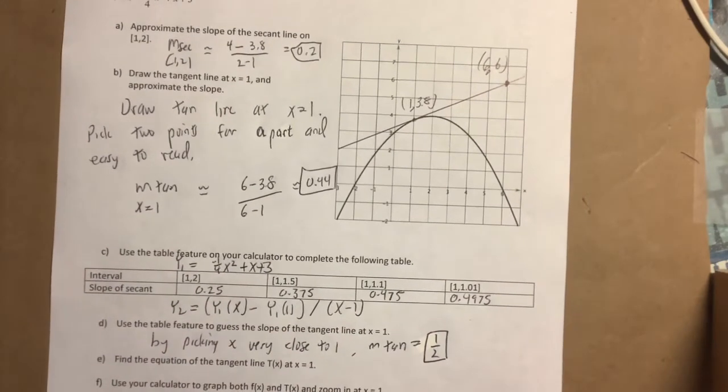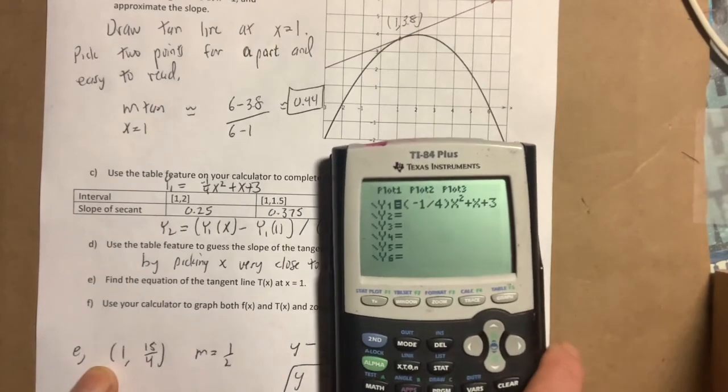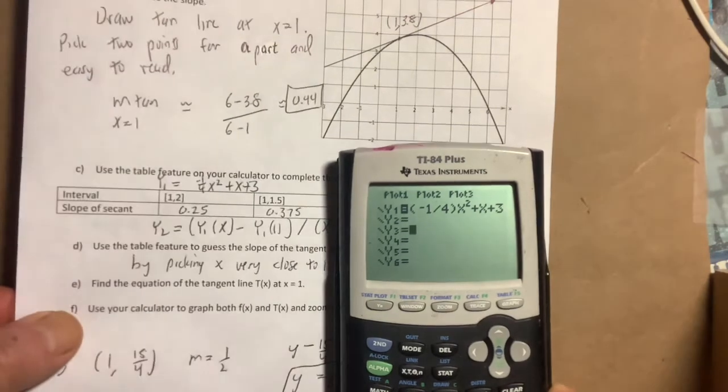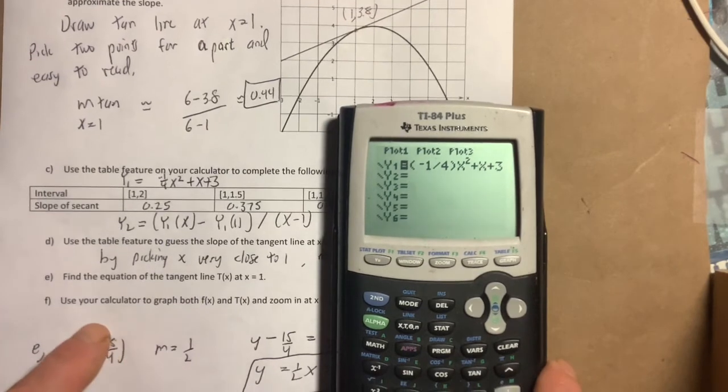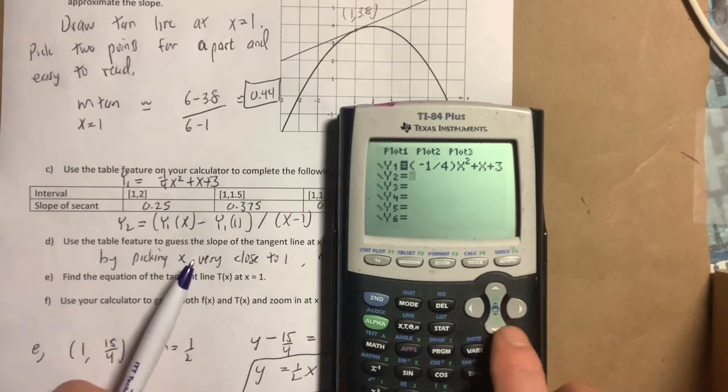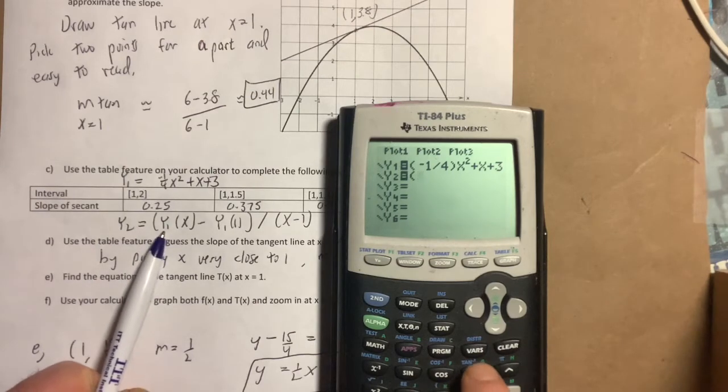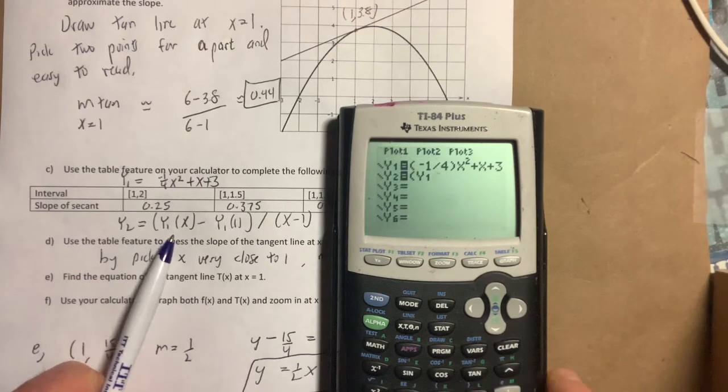Then what I ask you to do is use the table feature. We're going to enter the function right there. Now to use the table feature to find the slope of the secant line, you have to enter this expression right here. So let's go through that again: y2, you're going to hit parenthesis, y1 of x—remember you go VARS over to Y-VARS, hit enter twice and that pasted on there—of x.